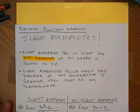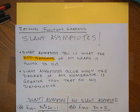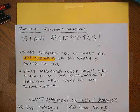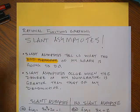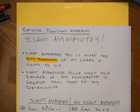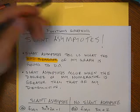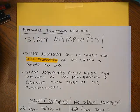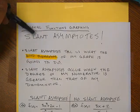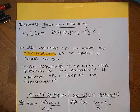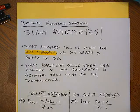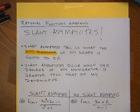Hey guys, welcome back. So today we're going to talk about what are called slant asymptotes. If you remember last time we talked about horizontal asymptotes, all in the context of graphing what are called rational functions — those are functions that are composed of a polynomial divided by another polynomial.